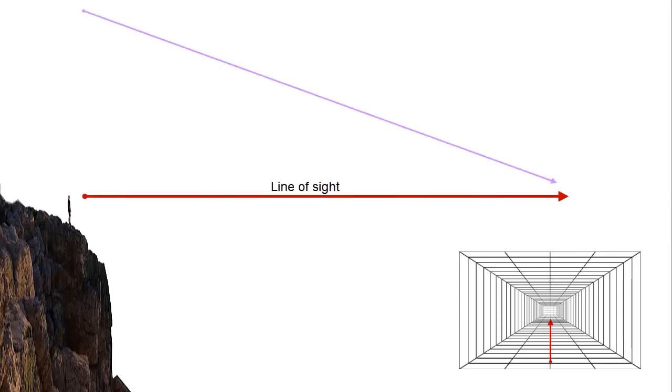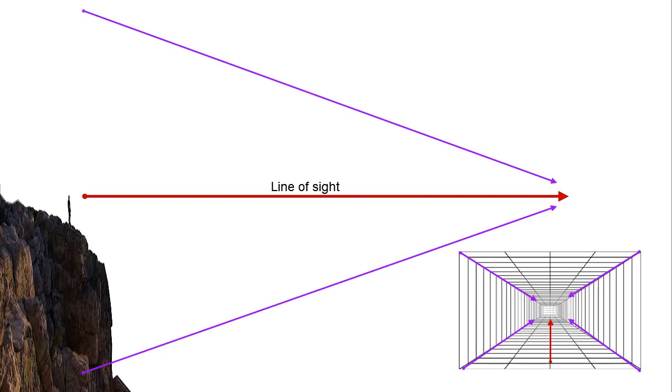Back on the mountain top, we have the perspective of the observer represented by the perspective grid down on the right-hand side there. And those purple arrows representing the lines of convergence to that observer's horizon.